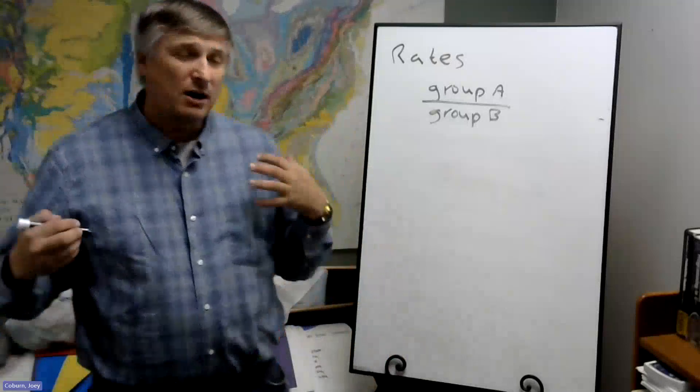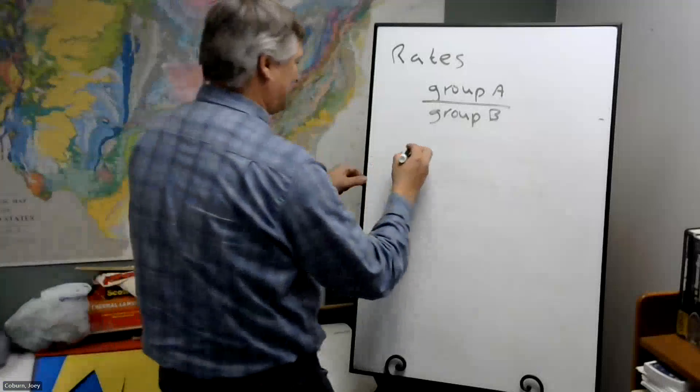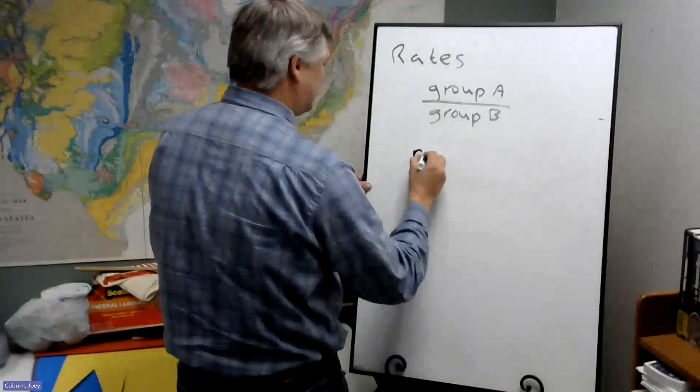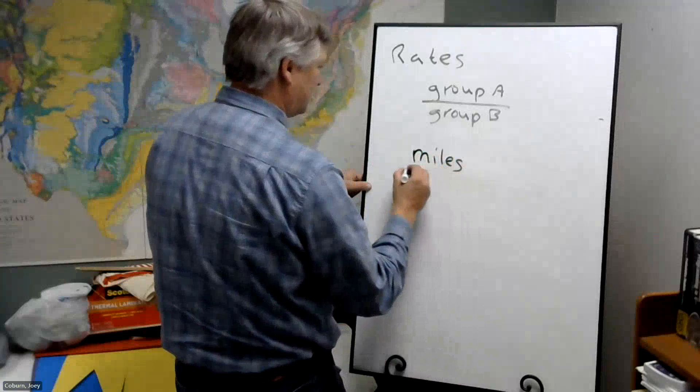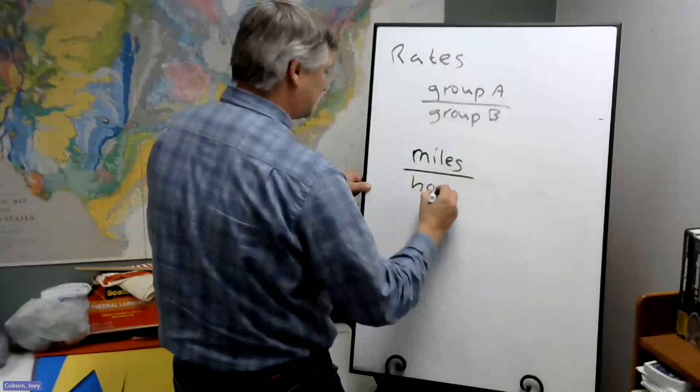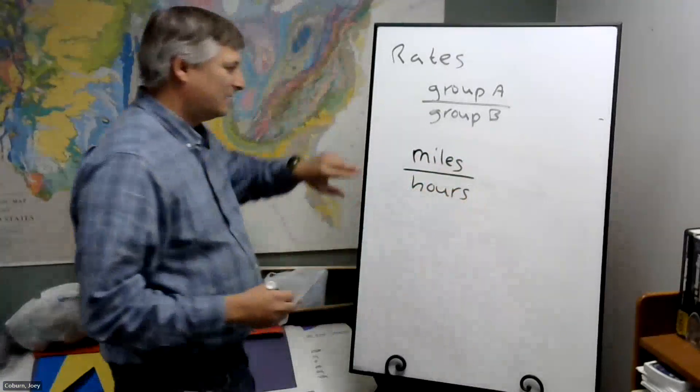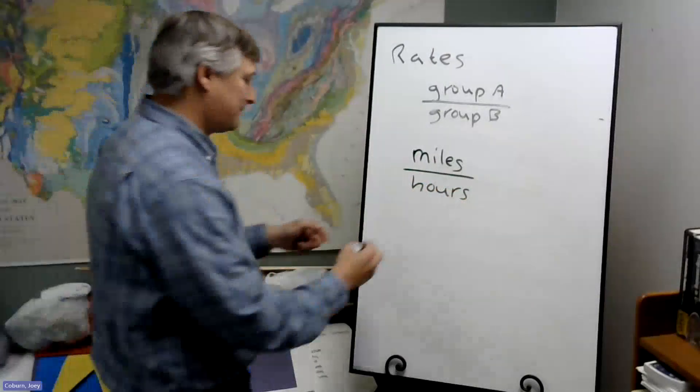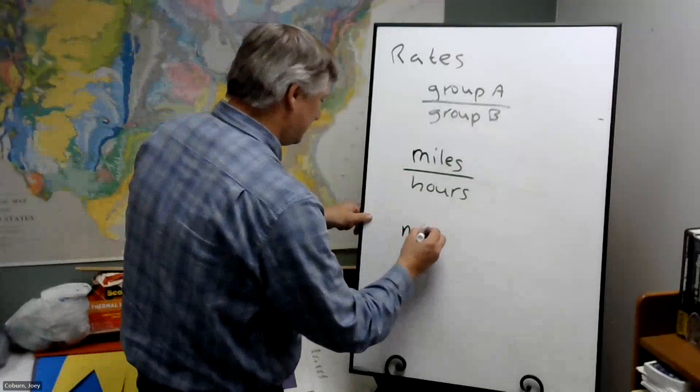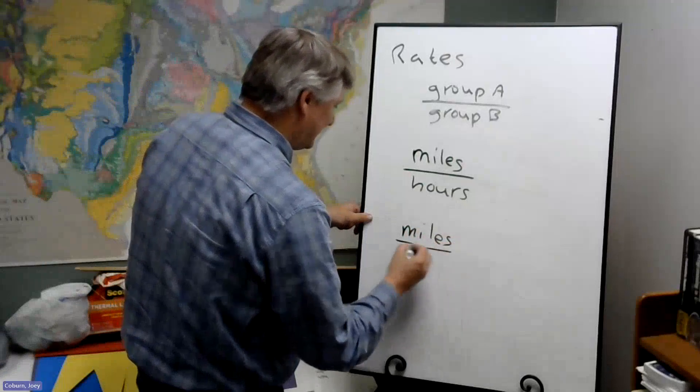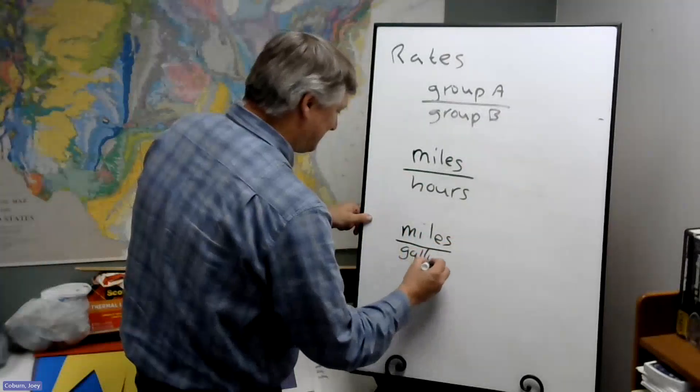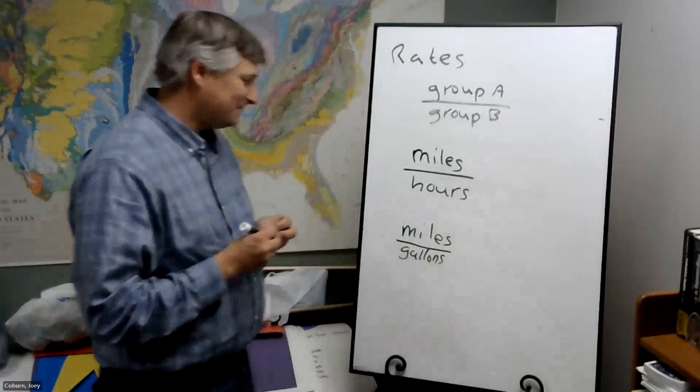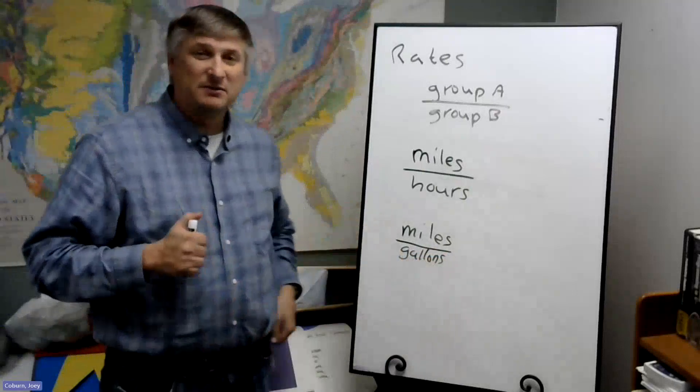So a common rate that we see would be miles over hours. Distance and time. Another one miles and gallons of gasoline.